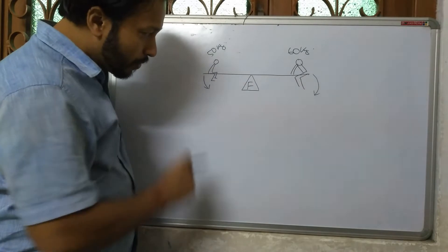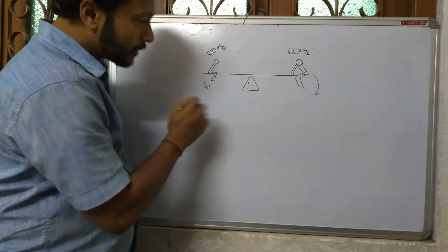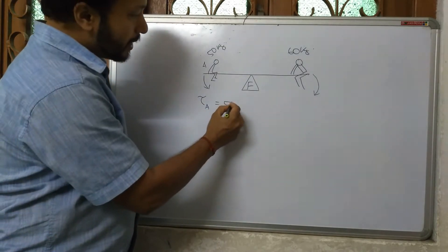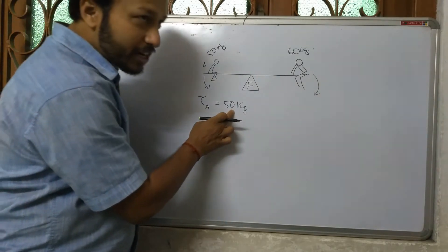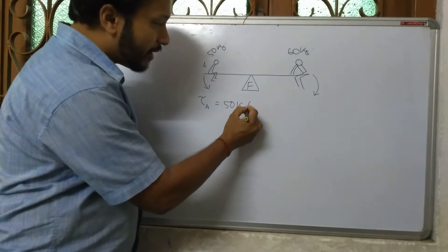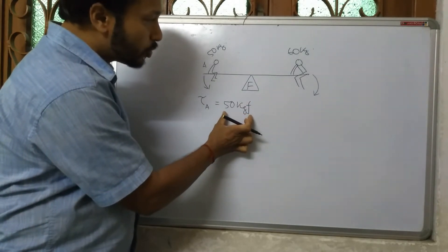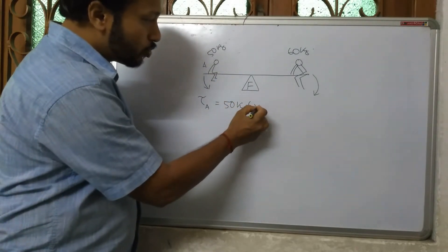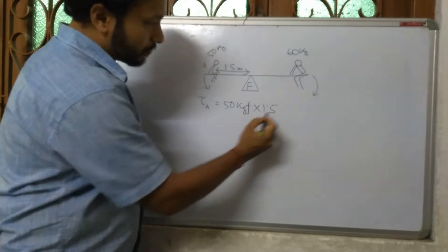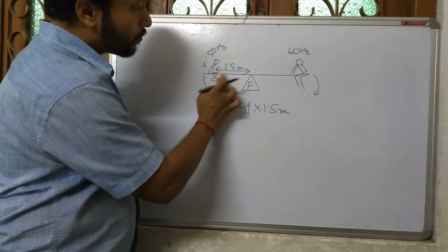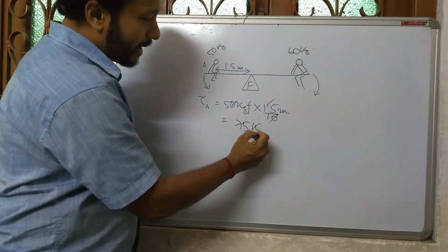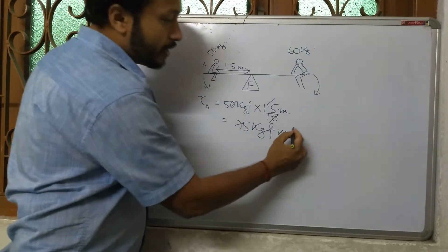Now if we want to calculate the anticlockwise torque for boy A, his mass is 50 kg. We convert it into weight: 50 kgf. We multiply by his distance from the fulcrum, which is 1.5 meters. So torque for A = 50 kgf × 1.5 m = 75 kgf·m. This is the anticlockwise torque.